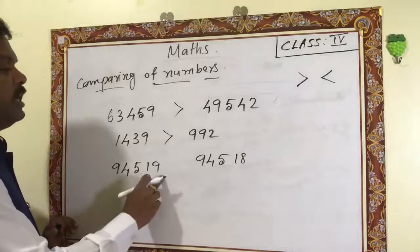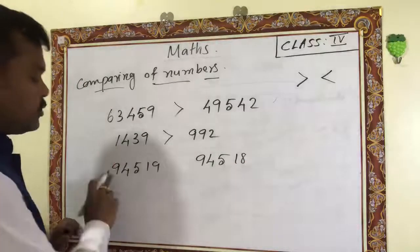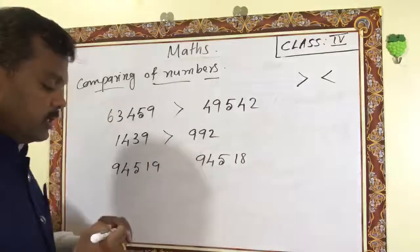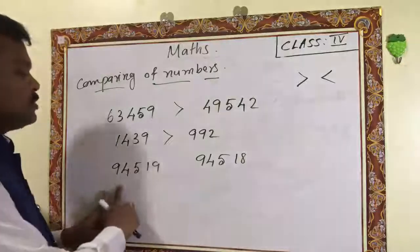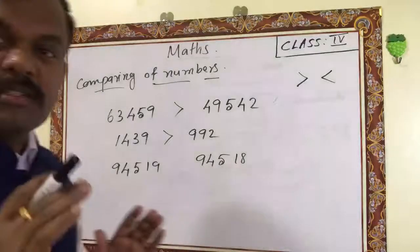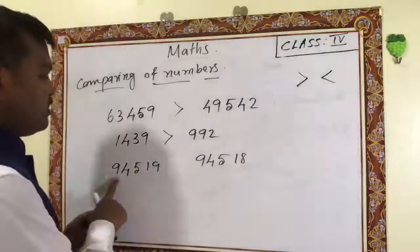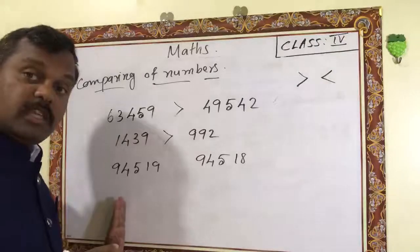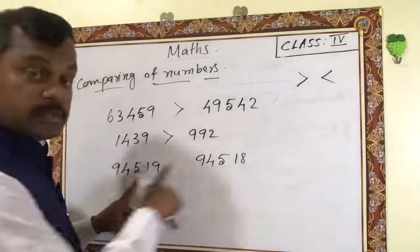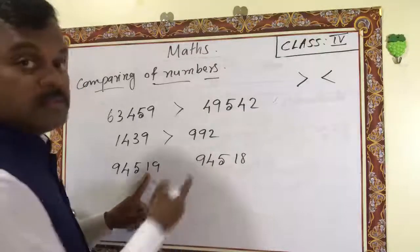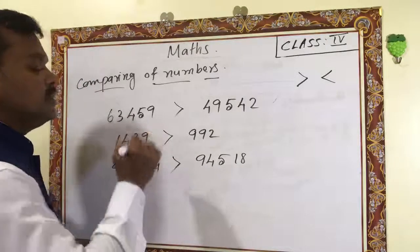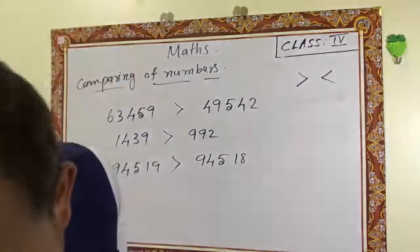Now compare 94,590 and 94,580. Count the digits: both have five digits. Digits are the same, so check the leftmost digit — nine and nine, same. Check the next: four and four, same. Check the next: five and five, same. Check the next: nine and eight — nine is greater. So 94,590 is the greater number.